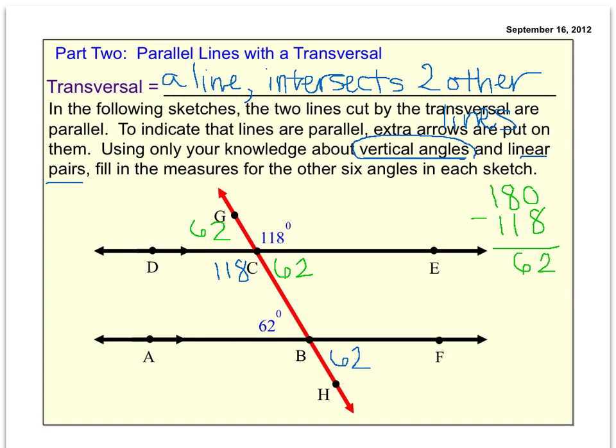Then down here, I think I've seen a pattern. If these vertical are 62, and they're linear pairs, 62 and this is a linear pair, these are a linear pair, these two angles are a linear pair, and so is this one. Well, these missing guys must be 118, because 62 plus 118 equals 180.